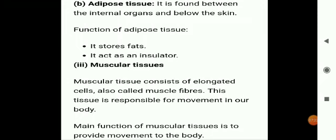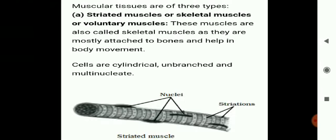Next is muscular tissue. Its main function is to provide movement to the body. Muscle tissues consist of long narrow cells called muscle fibers, which contract and relax to bring about movement of body parts. The first type is striated muscles, also known as voluntary or skeletal muscles, as they are attached to bones and their movement is under our will. They consist of long, narrow, cylindrical, unbranched fibers with blunt ends, and the cytoplasm contains myofibrils. Striated muscles constitute about 50 percent of our body weight.